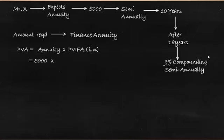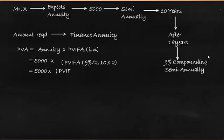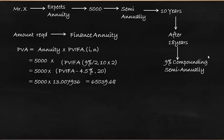Here the annuity is 5000 — the amount he is expecting. We multiply that by PVIFA at 9% divided by 2, because it is compounded semi-annually, and 10 multiplied by 2 periods. So PVIFA at 9%/2 means we look at 4.5% for 20 years in the present value interest factor annuity table. That gives us 5000 multiplied by 13.007936, which we find in the PVIFA table at 4.5% for 20 years.